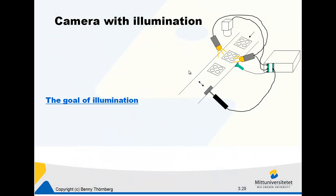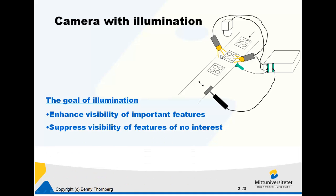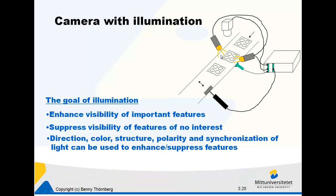The goal of illumination in this case and in general is to enhance the visibility of the important features. In this case the important features are the drilled holes — we want to use the light to enhance the visibility of these holes so we are able to measure their diameter. We also want to suppress the features in the picture that we are not interested in.